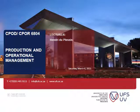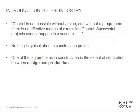This is the second part of this lecture. In the introduction to the industry, we get to chapter one of Cook and Williams: control is not possible without a plan, and without a program there is no effective means of exercising control. Successful control cannot happen in a vacuum. Nothing is typical about the construction industry, and one of the big problems is the extent of separation between design and production.